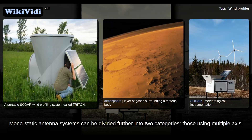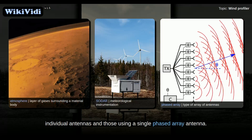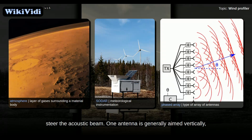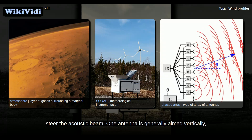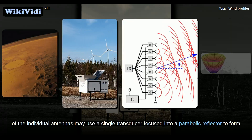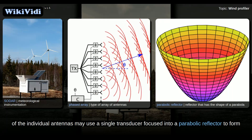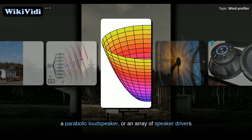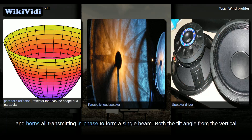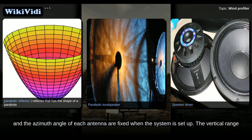Monostatic antenna systems can be divided further into two categories: those using multiple axis individual antennas and those using a single phased array antenna. The multiple axis systems generally use three individual antennas aimed in specific directions to steer the acoustic beam. One antenna is generally aimed vertically, and the other two are tilted slightly from the vertical at an orthogonal angle. Each of the individual antennas may use a single transducer focused into a parabolic reflector, or an array of speaker drivers and horns all transmitting in phase to form a single beam.